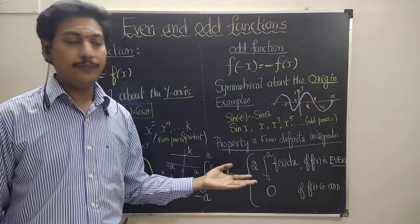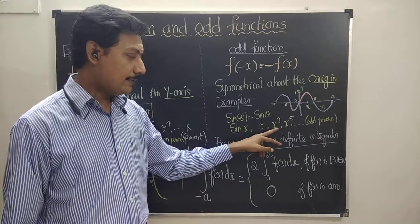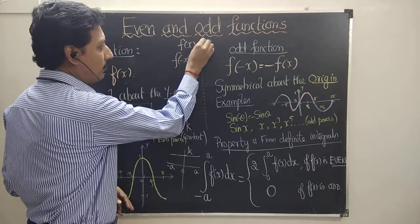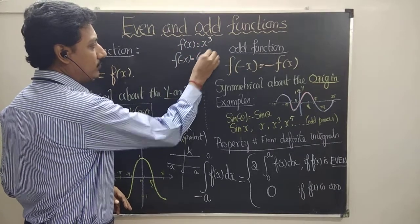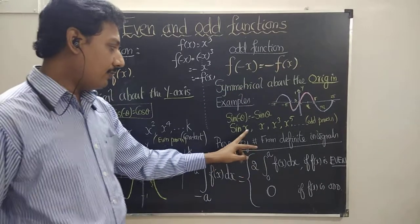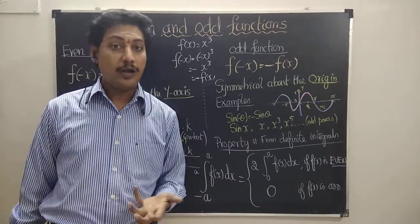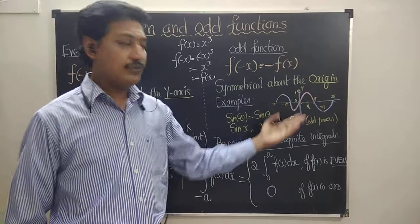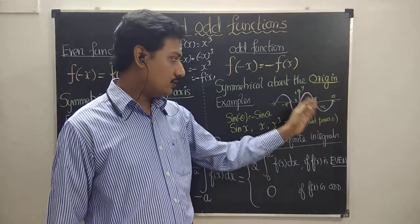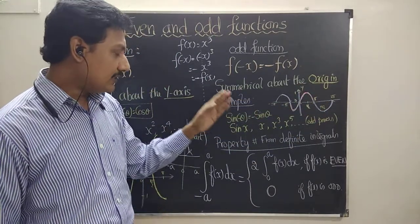For odd polynomials, when we replace x by minus x we get minus x, which is minus f(x). For example, f(x) = x³: replacing x by minus x gives (−x)³ = −x³ = −f(x), confirming it is odd. Also, sin(−x) = −sin x. Looking at the sine graph: sin 0 = 0, sin(π/2) = 1, sin π = 0, sin(3π/2) = −1, and the graph is symmetric about the origin.